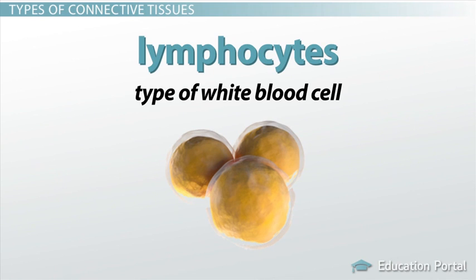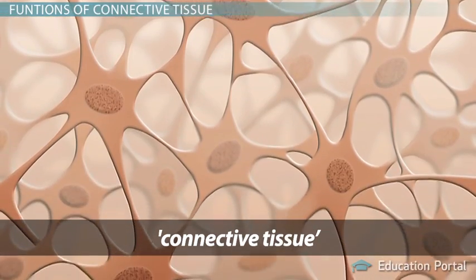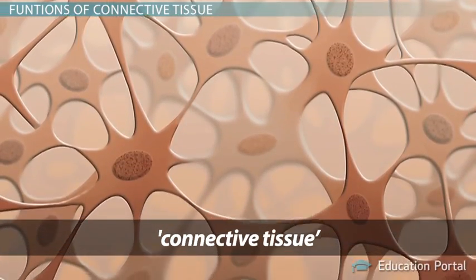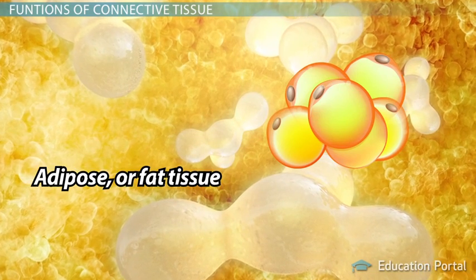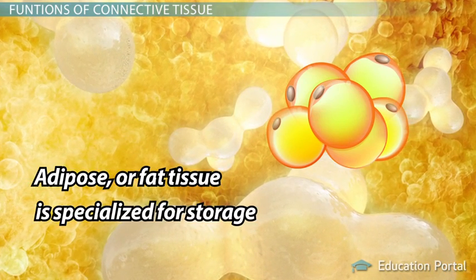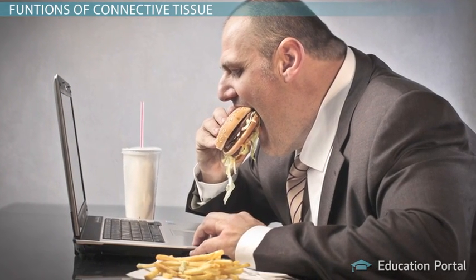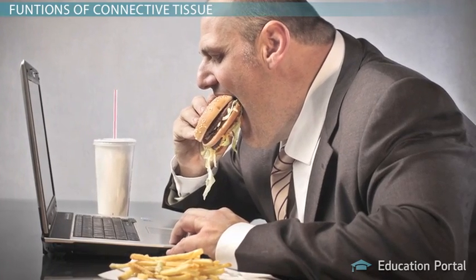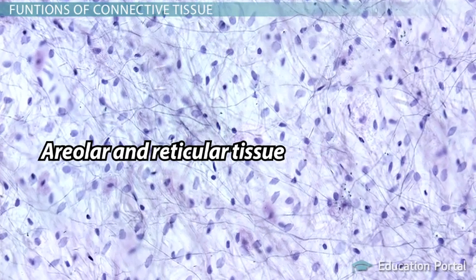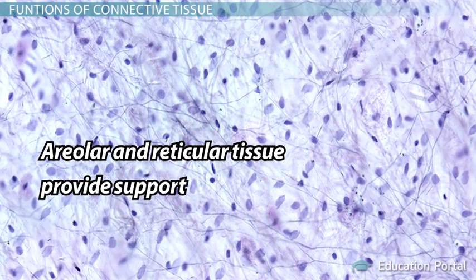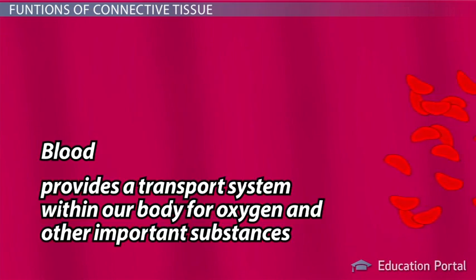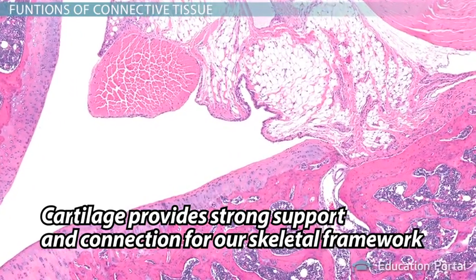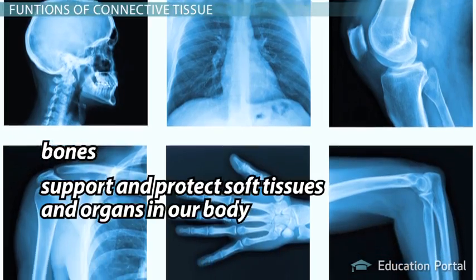Although the term connective tissue is fairly self-explanatory, these tissues do more than simply connect body parts together. Because the types of connective tissue vary greatly, so do their functions. Adipose, or fat tissue, is a loose connective tissue specialized for storage, serving the important purpose of warmth and elasticity of certain organs. Areolar and reticular tissue provide support and fill up unused spaces in the body. Blood, a fluid connective tissue, provides a transport system for oxygen and other important substances. Cartilage provides strong support and connection for our skeletal framework, and bones function to support and protect soft tissues and organs.